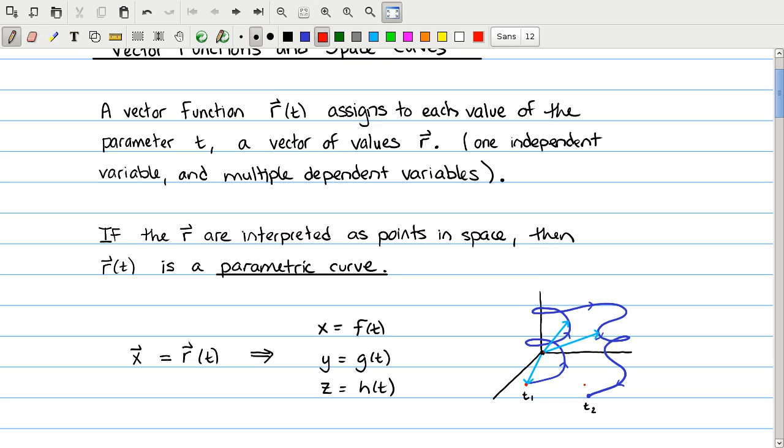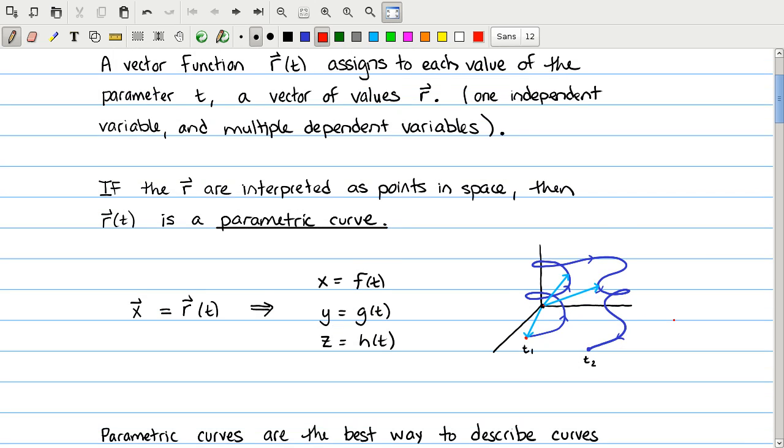We should be able to notice a few things about this curve. It's sort of complicated. It twists around. It sort of turns back in on itself. It does kind of complicated things. And parametric curves are able to do this, which makes them an ideal tool for describing real curves in space. This could be, for instance, the flight path of a bumblebee or an airplane or something flying around in space.